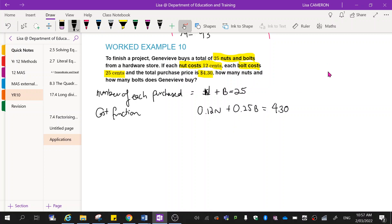So what we'd really be graphing here is our costs versus our number of items. So all we have to do is the same thing we always do. We're going to rearrange the first equation. So then n is going to be equal to 25 minus b. Okay, which makes sense. Because if there's 25 items, and you take away the number of bolts, you'll be left with the number of nuts.